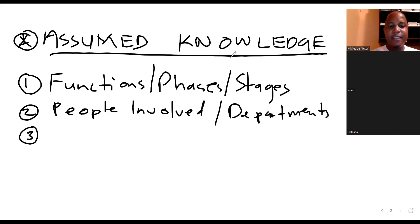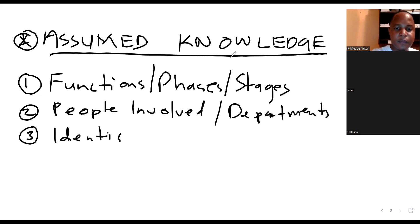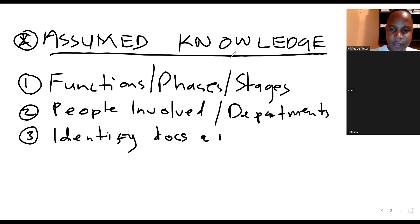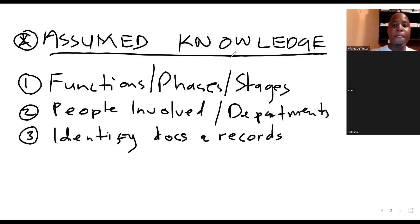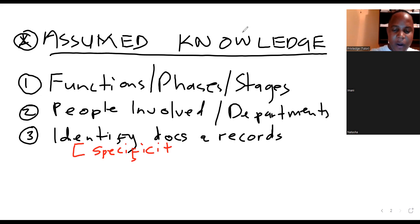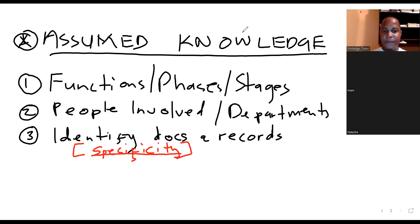Number three: after identifying the people or departments within each function of the cycle, the next thing is to identify the specific documents and records generated at each of those respective stages. There is a need for what I call specificity — when you're dealing with procedures, one of the things you do with documents is inspect them. When you inspect a document, you need to be very precise to the examiner about what type of document you are inspecting — whether it's a sales invoice, an order form, goods requisition forms, delivery notes, or minutes of a directors' meeting.